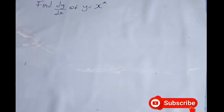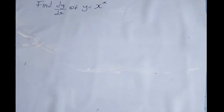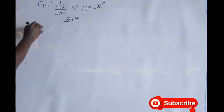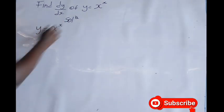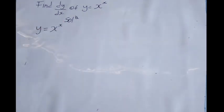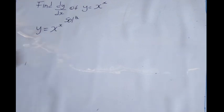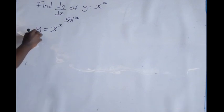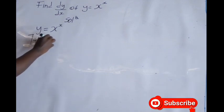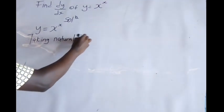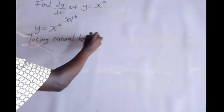We need to find the derivative of y equals x to the power x. When finding the derivative of functions like this, we use natural logarithms. To do so, we take the natural logarithm of both sides.